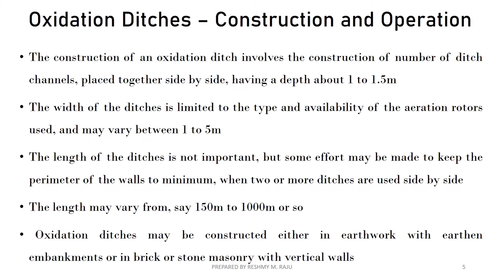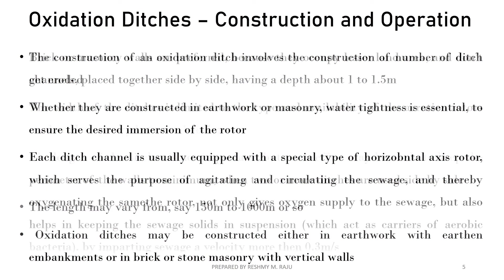The ditch channels have a width-depth ratio of 1 to 1.5 meters. The width of the aeration rotors varies between 1 to 5 meters. Two ditches are sometimes placed side by side, and the channel length ranges from 150 to 1000 meters.